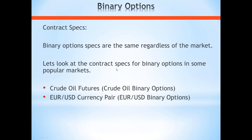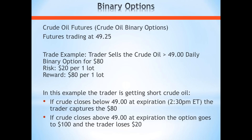Let's look at a crude oil example. Crude oil is trading at $49.25. I sell the crude oil greater-than $49 daily binary option for $80. My risk is $20 per one lot and my reward is $80 per one lot. Why? If the most the contract can be worth is $100 and I sell it for $80, the most it can go to is $100 — so if it goes to $100, I lose $20. If I see the contract expire worthless, my profit is the $80 that I sold it for.